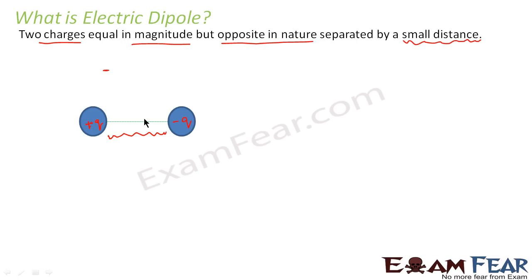This distance has to be very small. What would happen if the distance is very large? In that case the two charges will not have any effect on each other, because the charge plus q is so far from minus q that it is not even within the range of the electric field of plus q. So when two charges are placed near each other at a very close distance, equal in magnitude but opposite in nature, that system of two charges is known as an electric dipole. The term 'di' means two, so two charges constitute a dipole.